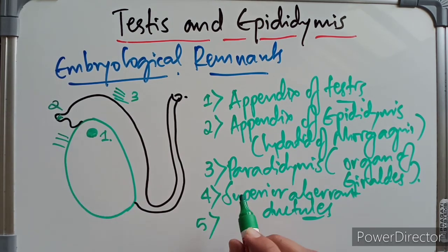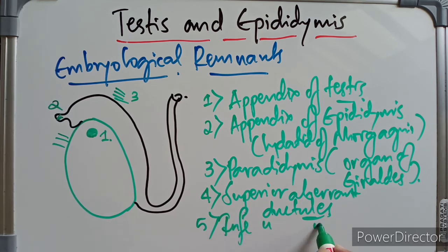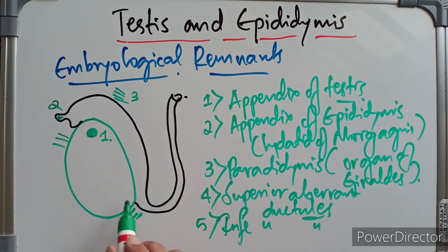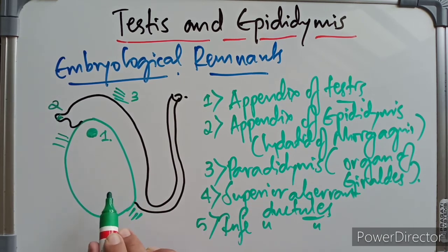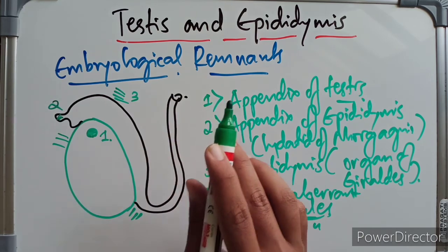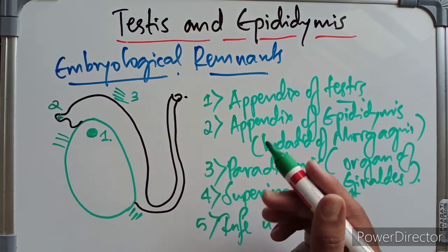The last remnant is the inferior aberrant ductules. They are one or two in number and are attached to the tail of the epididymis. They are the remnants of the intermediate mesonephric tubules.